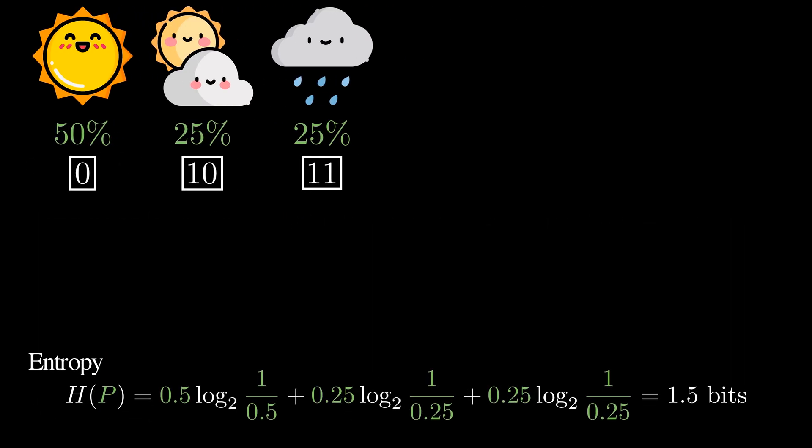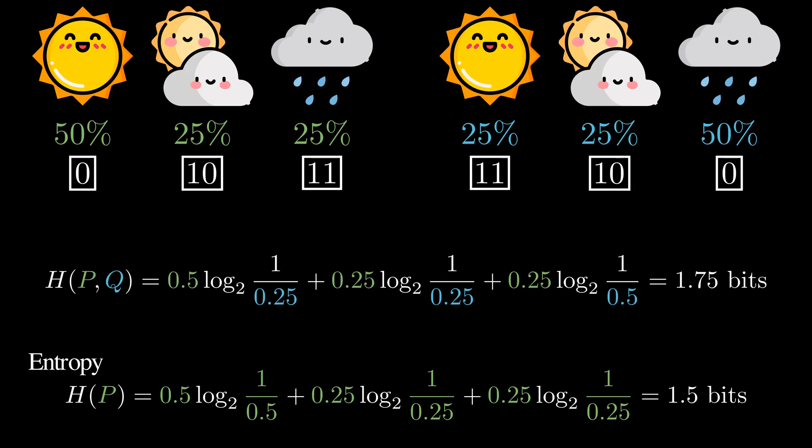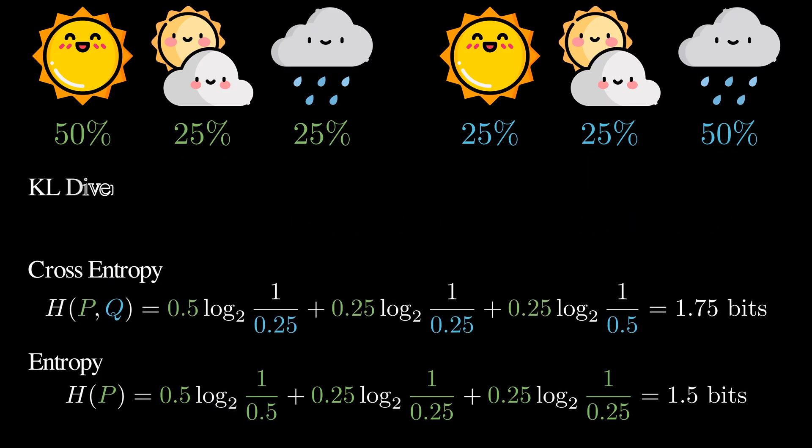But what if we use the code optimized for another distribution? In this case, on average, we need 1.75 bits of information. This is called cross entropy. The average code length is now longer because we trust the wrong model. The KL divergence is simply the extra bits we waste. It measures the extra cost of using the wrong distribution Q to encode the data when the data actually follows a true distribution P.